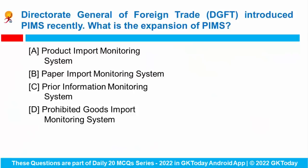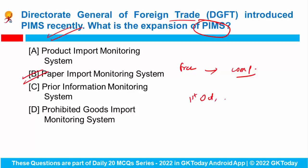The Directorate General of Foreign Trade recently introduced PIMS. What is the full form of PIMS? It stands for Paper Import Monitoring System. DGFT has amended the import policy of major paper products from free to free subject to compulsory registration under PIMS. This system will come into effect from 1st October 2022, and importers will be required to obtain an automatic registration number through the online system.